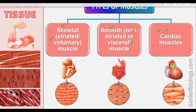The muscles are of three types. The first muscle type is skeletal muscles, which are striated muscles and are also called voluntary muscles — muscles which we can move by our own will. The other type of muscles is non-striated or smooth muscles.